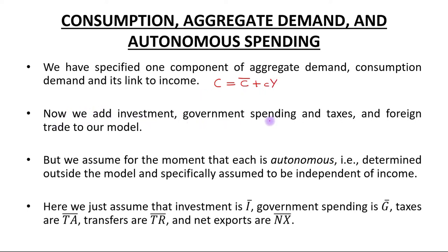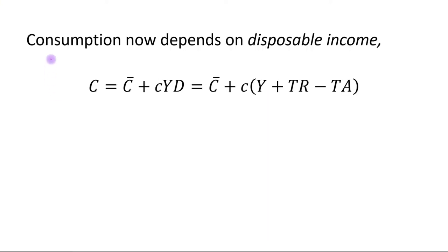Now we add investment, government spending, taxes, and foreign trade to our model, but we assume for the moment that each is autonomous — that is, determined outside the model and specifically assumed to be independent of income. Therefore, we assume investment is Ī, government spending is Ḡ, taxes are T̄A, transfers are T̄R, and net exports are N̄X.